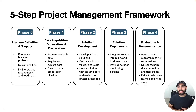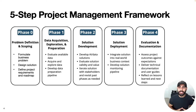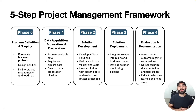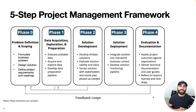Finally, phase four is the evaluation and documentation step. This involves assessing project outcomes and comparing them against expectations from the outset of the project, delivering technical documentation and user guides, and doing a retrospective: reflecting back on the project, looking at things that went well, looking for opportunities for improvement, considering future works and limitations, and starting to talk about obvious next steps. Of course, we also have feedback loops in this five-step framework.